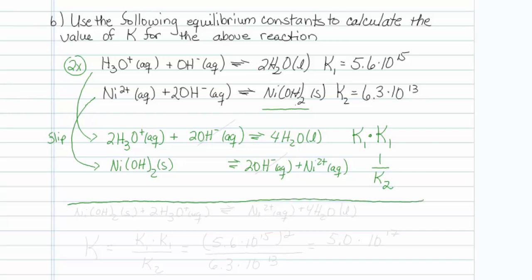Now, notice when I add them up, I get what I want. The hydroxides cancel out. And I'm left with nickel hydroxide, which I would like to be a solid, and react with two hydroniums to give a nickel two plus and four waters.